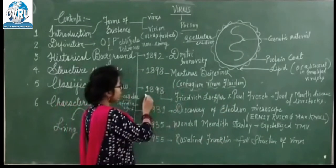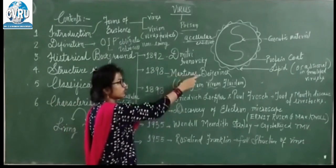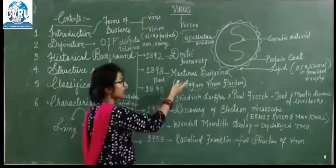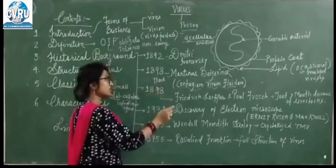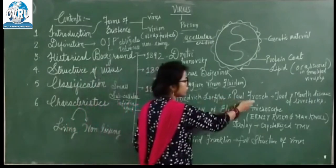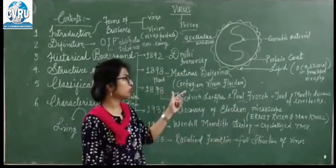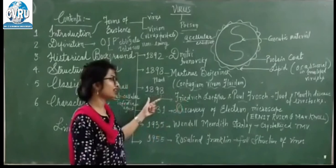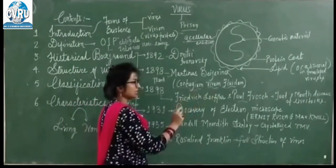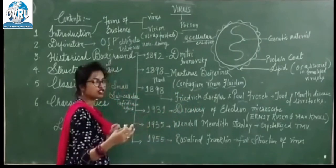At the same period of 1898, B.J. Rink ने plants में disease की खोज की. Also at the same period, Friedrich Loffler and Paul Frosch were researching foot and mouth disease in livestock — they found that a particle, not an organism, is causing this type of disease.